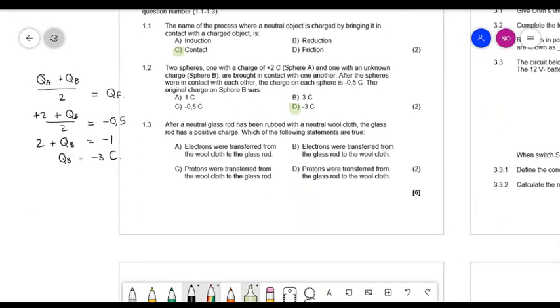And then 1.3 says a neutral glass rod is rubbed with a neutral wool cloth. The glass rod is positively charged. What of the following statements is true? Okay, it is easy to immediately rule B and D out because protons can't be transferred, only electrons can be transferred. And then when we look at the fact that the glass rod has become positive, then you have to know that means the glass rod has lost electrons. So in other words, the electrons transferred from the glass rod to the wool cloth. And those were the short questions.